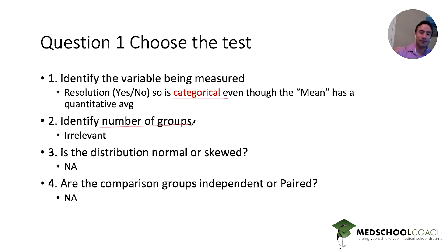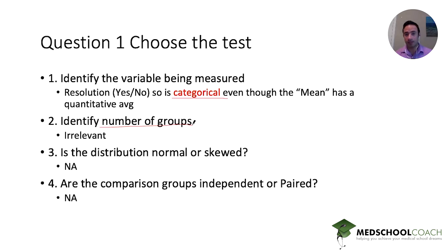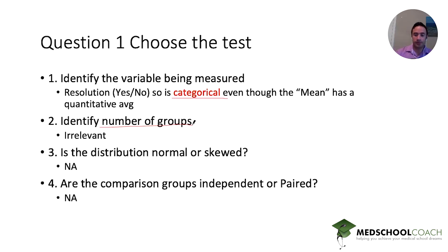A quick approach for these questions: start with, is the data categorical? Then look at the number of groups. That's the fastest way to go through answer choices and eliminate options. If you've gotten that far, the next step is to look at the distribution. In this case, with a chi-squared test, it doesn't matter — you can use it for normally distributed or skewed data, and for independent or paired groups.